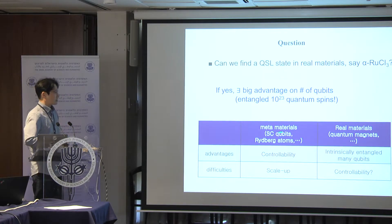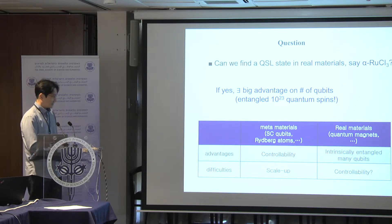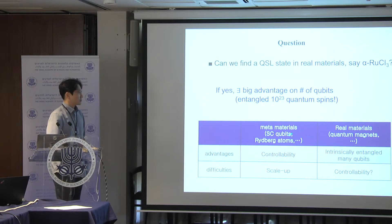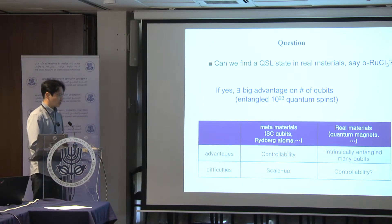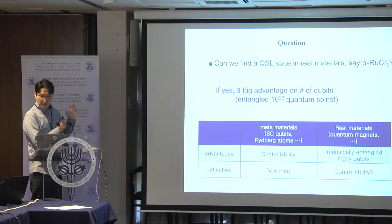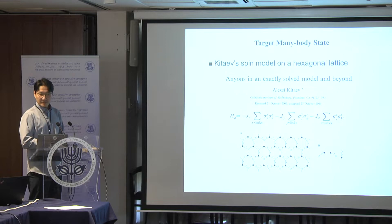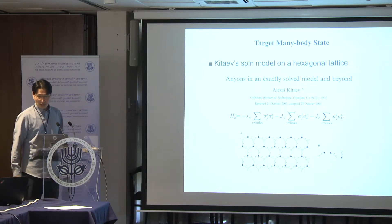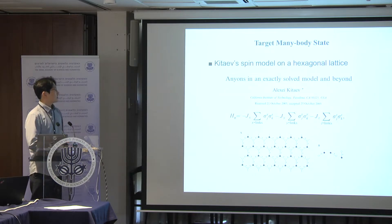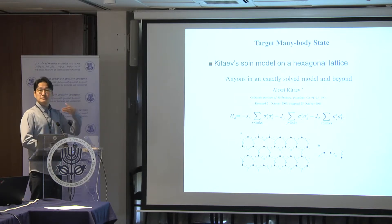To find some entangled many-body state, we need a target system. We can choose probably the best-known example in condensed matter physics — the Kitaev spin model on a hexagonal lattice. In 2005, Kitaev published this paper, proposing one specific model: a spin model on a hexagonal lattice where at each site we have a qubit described by two-by-two matrices.